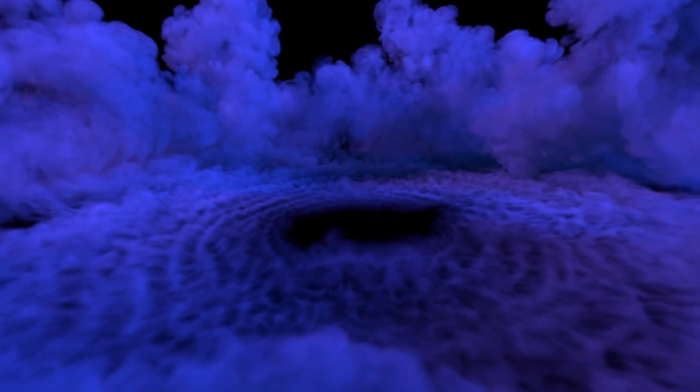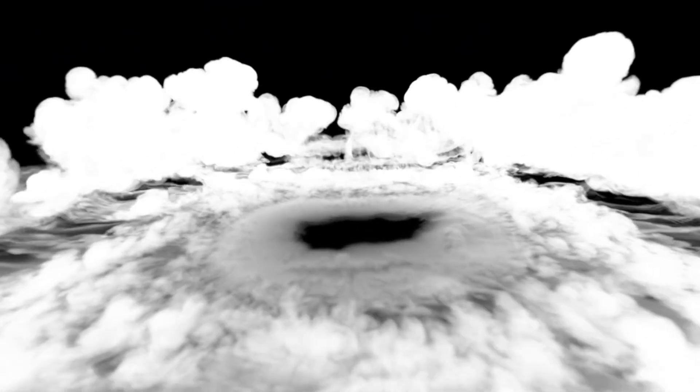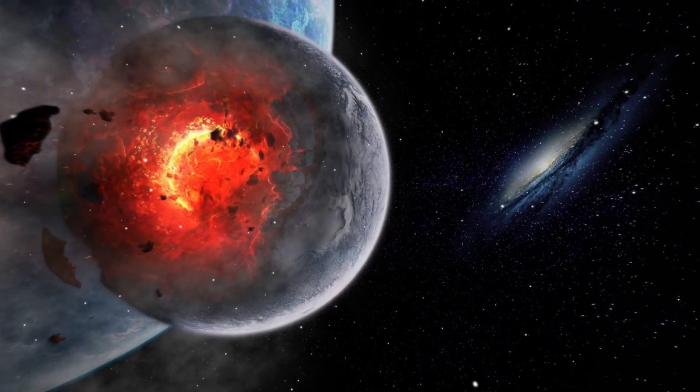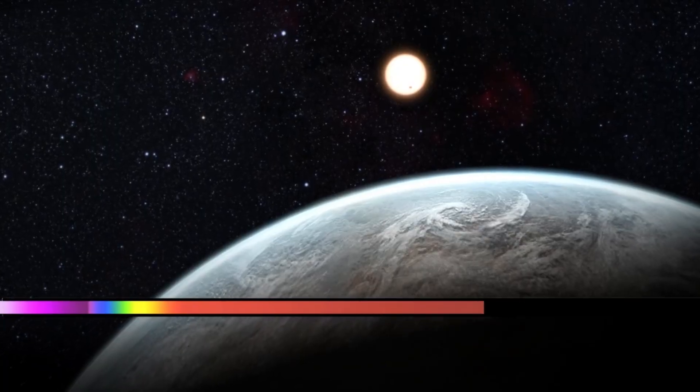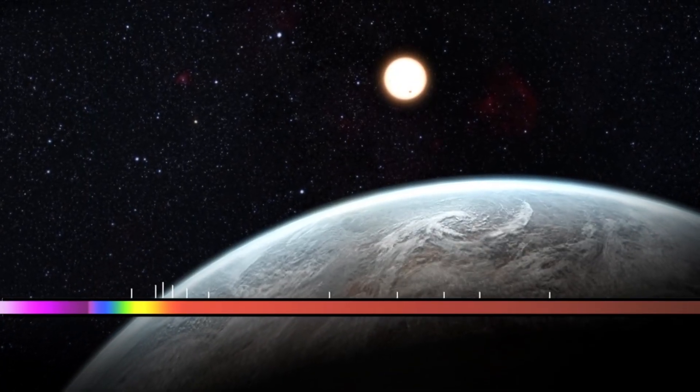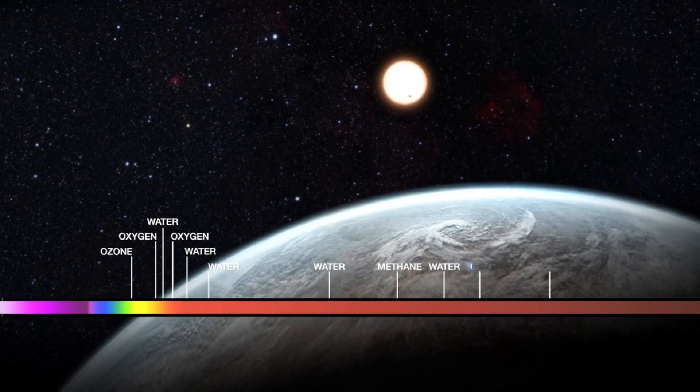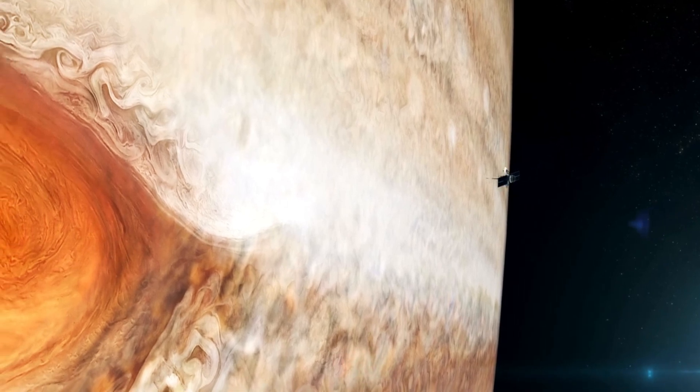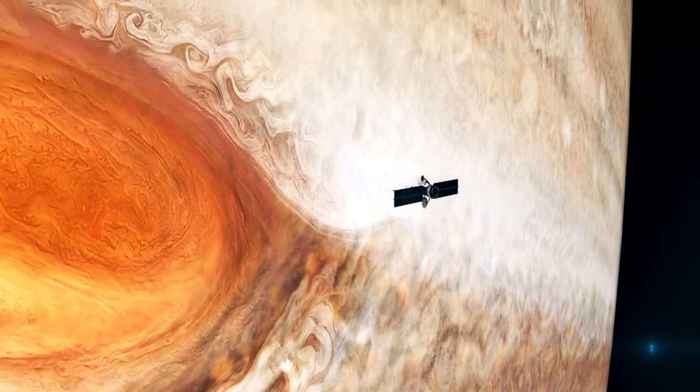Moreover, the collision on Neptune presents a new opportunity to rethink the long-term geological and atmospheric evolution of ice giants. If impacts of this magnitude occur even once every few million years, they could be a major driver of atmospheric chemistry, internal heat distribution, and even rotational dynamics. Perhaps features observed on Uranus and Neptune, previously attributed to slow internal processes, are in part the scars of ancient collisions that, like this one, dramatically reshape their histories.